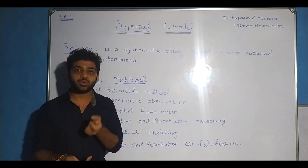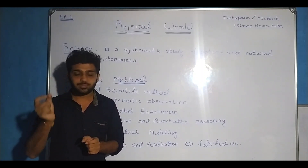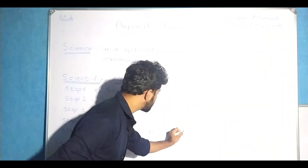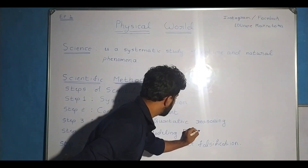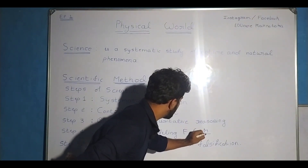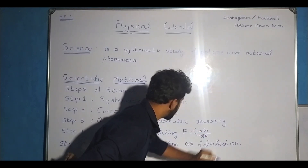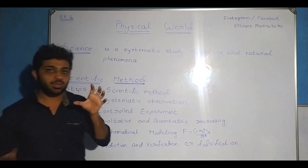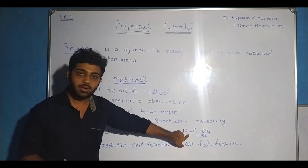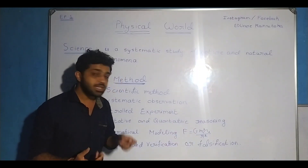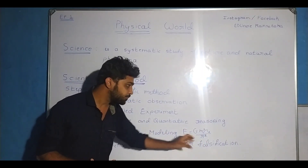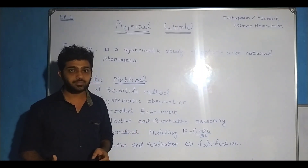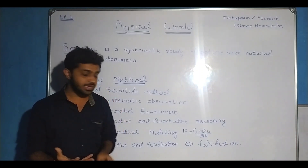The fourth step is mathematical modeling. For Newton's law of gravitation, the force of attraction between any two bodies is directly proportional to the product of masses and inversely proportional to the square of the separation. This gives us: F = G M₁M₂ / R². We express the statement using symbols and numerical values. That is mathematical modeling.